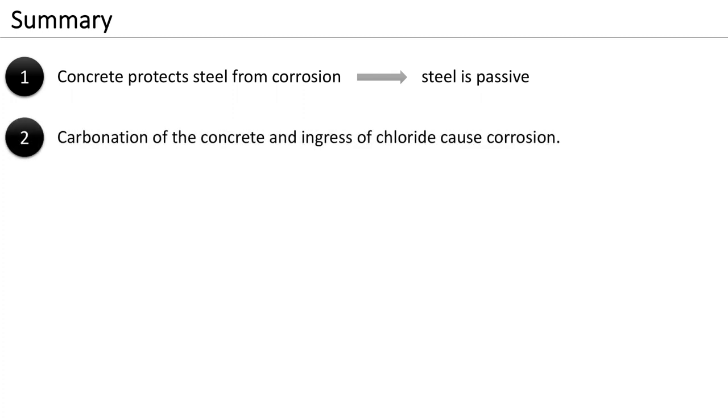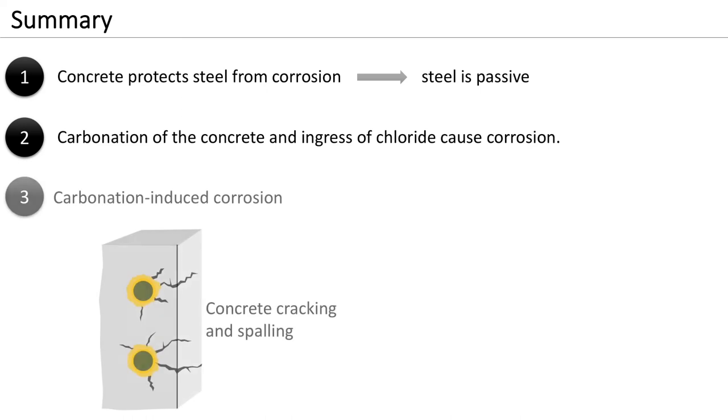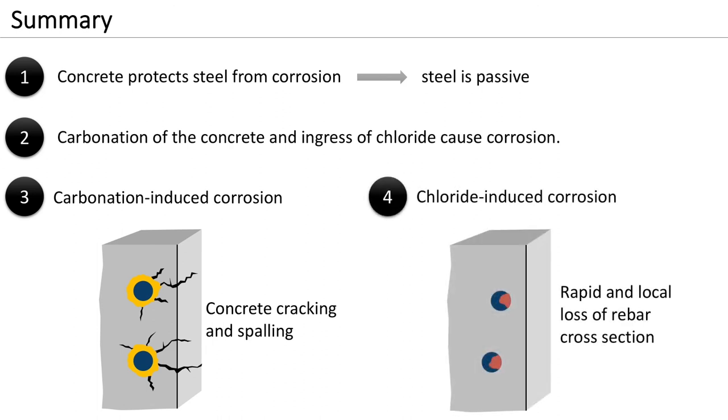In this video, we have seen how concrete protects steel from corrosion, namely by enabling the formation of a passive film. However, both carbonation of the concrete and ingress of chlorides can cause corrosion. Carbonation induced corrosion mainly leads to concrete cracking and spalling. Chloride induced corrosion, on the other hand, can rapidly and locally reduce the rebar cross section.